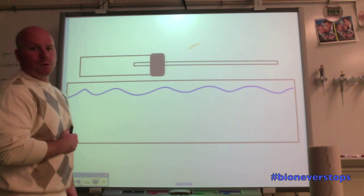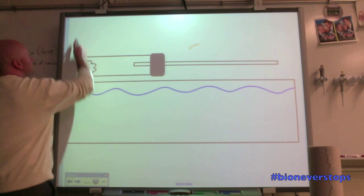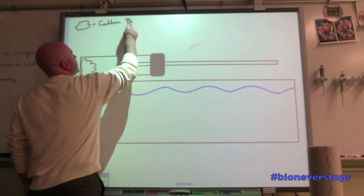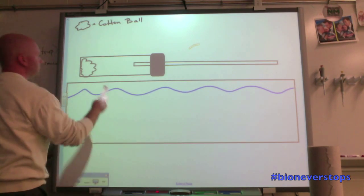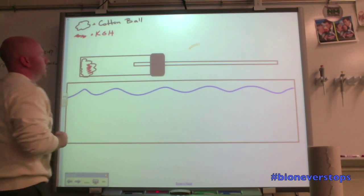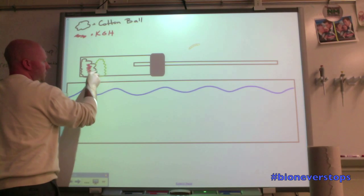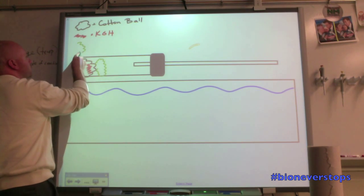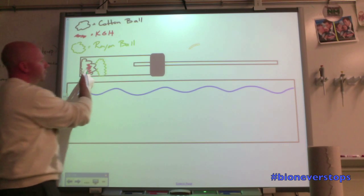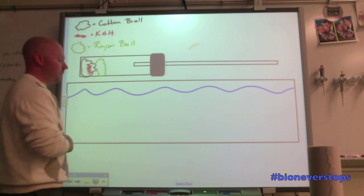And what we're going to do is, in this respirometer, we're going to put a cotton ball in the bottom. So that is a cotton ball. Cotton is absorbent, so we're going to put a liquid on there called KOH. We're going to put another fluffy ball in here, but it's not going to be cotton this time. This time it's going to be rayon. And what's cool about rayon is that it is non-absorbent. So the liquid that we put onto that cotton ball isn't going to be getting saturated with that KOH that we put on there, that potassium hydroxide.